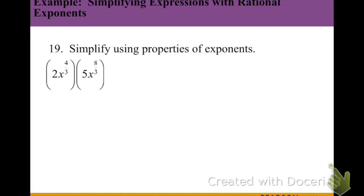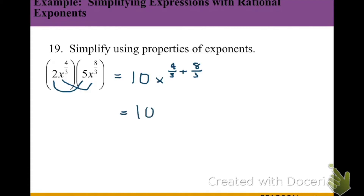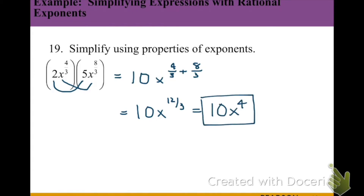Just like with our integer exponents, the same properties apply to our rational exponents. In this example, notice that since we have parentheses, we are multiplying 2x to the 4/3 times 5x to the 8/3. Remember, when multiplying with the same base we add our exponents. So we multiply the coefficients: 2 × 5 = 10, then add 4/3 + 8/3 = 12/3, which reduces to 4. So our final answer is 10x to the 4th power.